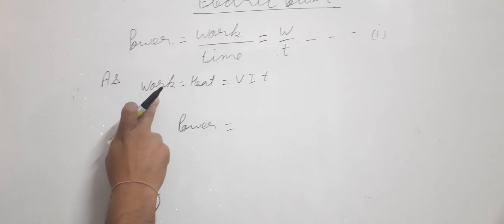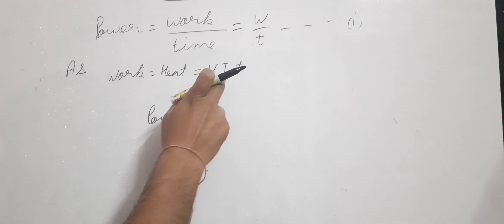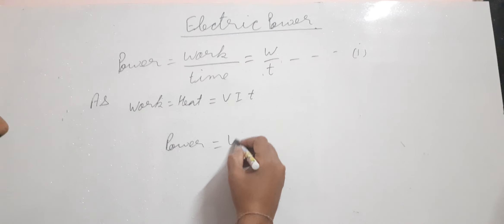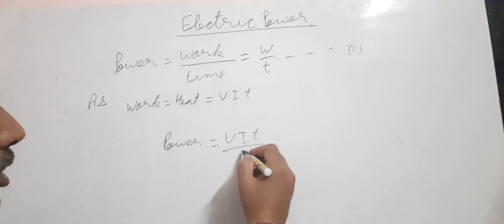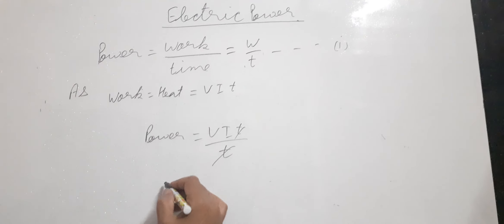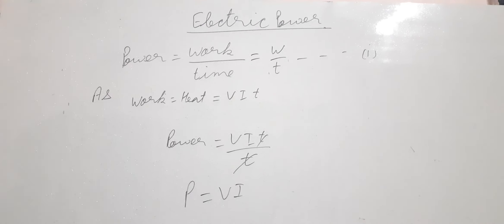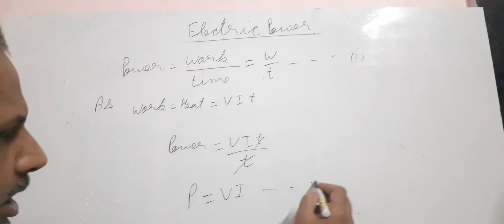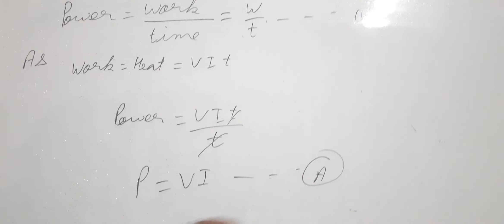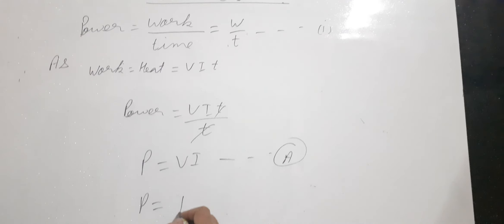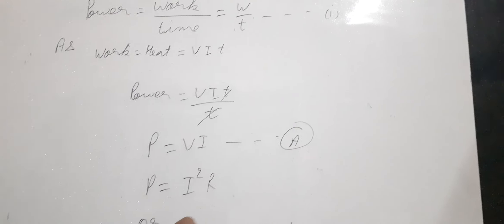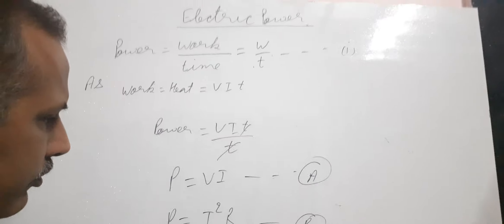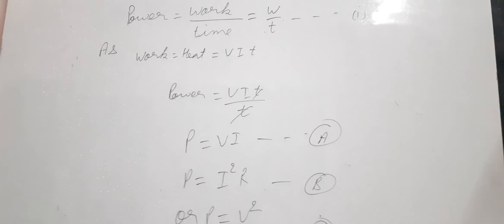From the formula of heat, work equals the amount of heat generated, which is V × I × T. Again by using Ohm's law and substituting the value of V or I, it can be rewritten as power = I² × R or power = V²/R. These are the three formulas by which you can calculate power.